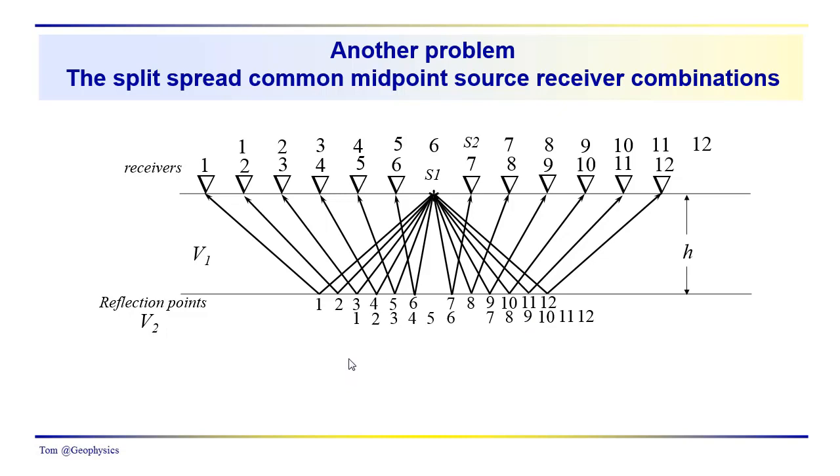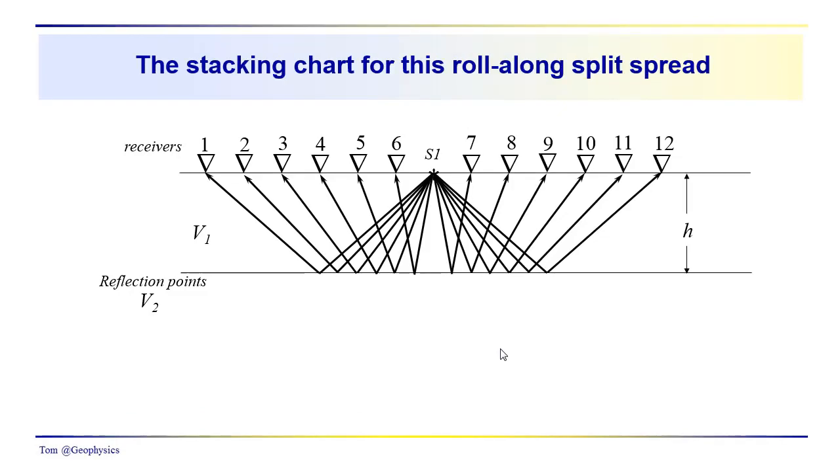why don't you again pause the video, sit down and figure out what the receiver combinations are going to be. Are they going to be all the odd ones? Are they going to be all the even ones? Which receiver combinations are going to give you information from a common midpoint, this point, this point, this point, whatever midpoint it is that you happen to be looking at. So take a moment to do that. And welcome back.